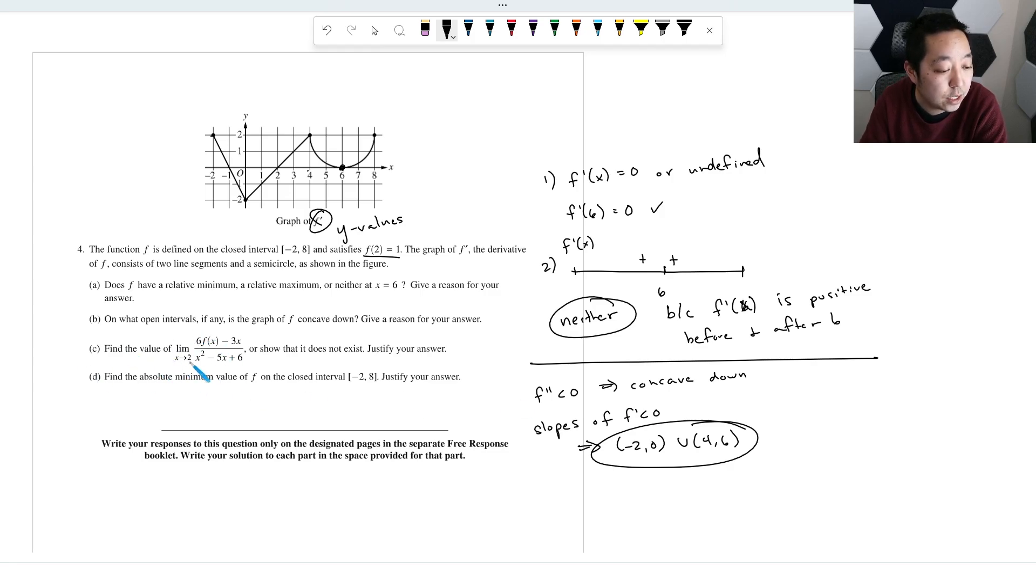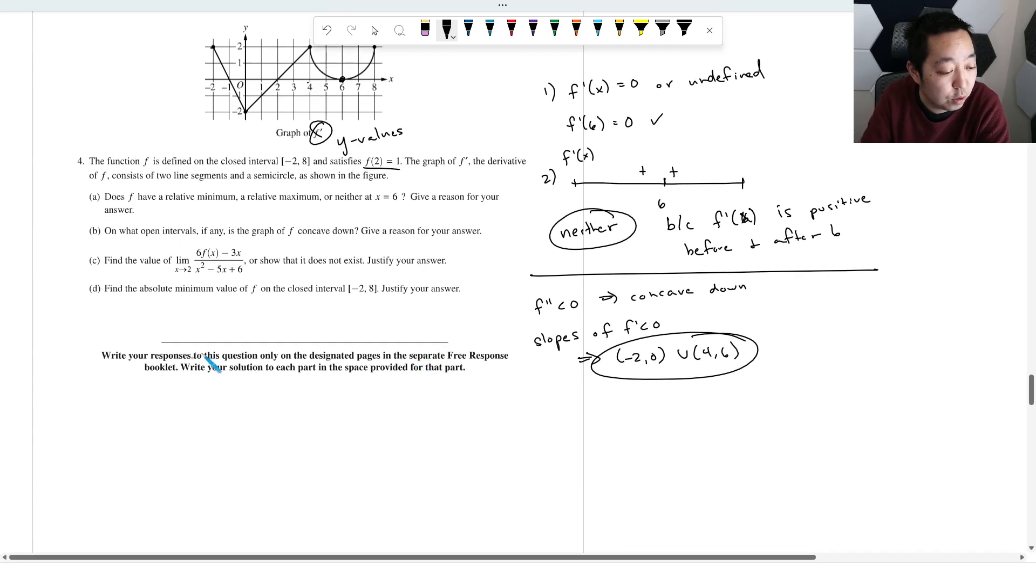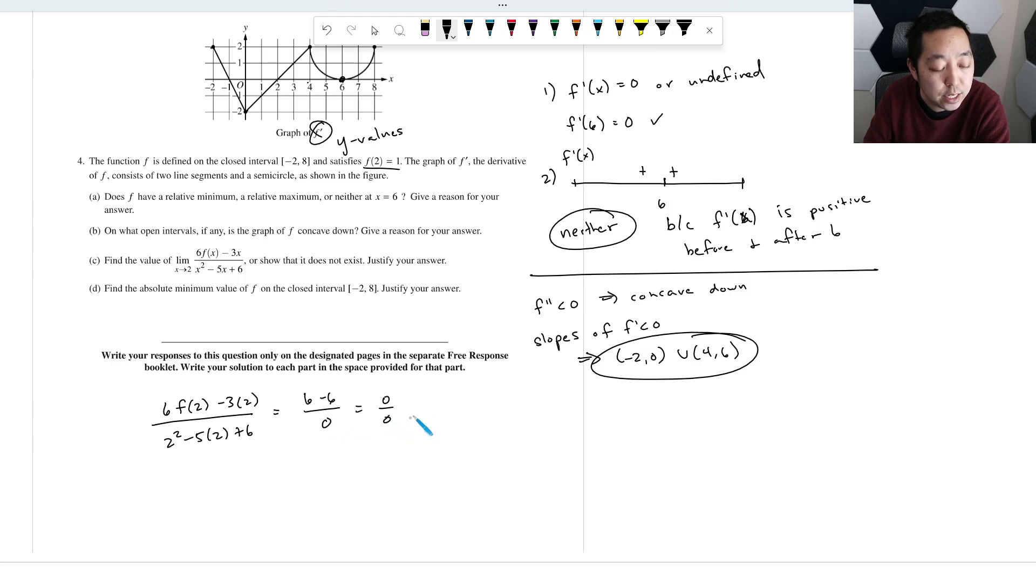Find the value of the limit as x approaches 2 of this, or show does not exist and justify your answer. So first thing we always do when we plug in a limit is we're going to just compute this first. That's going to be what is f of 2? Well, f of 2, they tell us is 1. So this is going to be 6 minus 6 on the top, over 4. Notice I don't say that this is equal to this thing. This is not equal to this. This is just me computing and plugging in to see if I get a number. This would be 4 minus 10, negative 6 plus 6, which is 0. So you get 0 over 0. That's an indeterminate form.